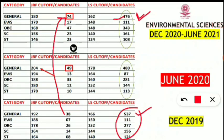For June 2022, considering that 204 was the highest cut-off mark ever, 180 was the cut-off last time, and 192 was the December 2019 cut-off for the general category — after analyzing all these things, I have prepared an expected cut-off prediction.